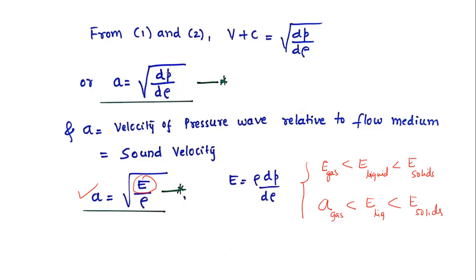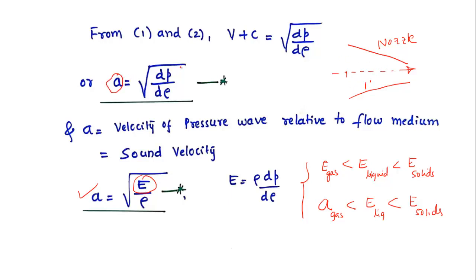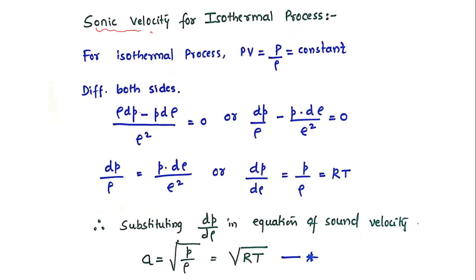The velocity of sound is a function of dp/dρ, and pressure and density are not constant — they depend upon the process. For example, in a nozzle where fluid flows, pressure reduces and velocity increases. Whether temperature remains constant or some other process is involved affects the change in pressure and density. Therefore, to evaluate A, we must know exactly what type of process is undergoing, and we will derive the velocity of sound for specific processes.